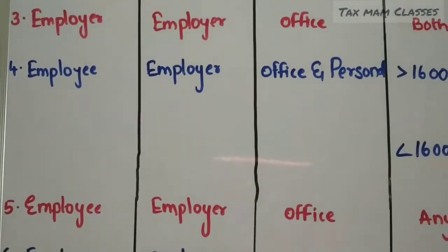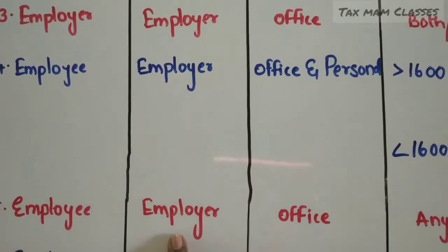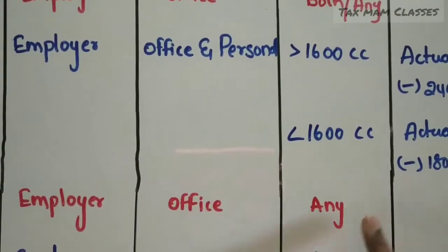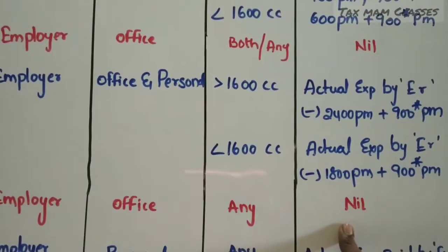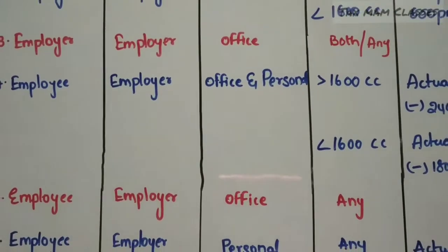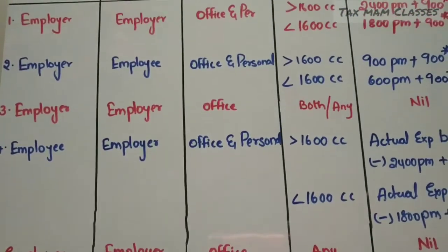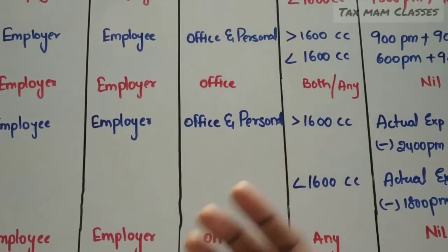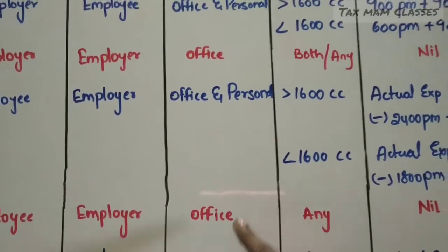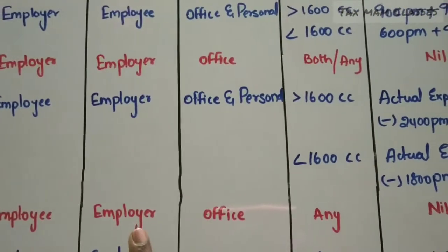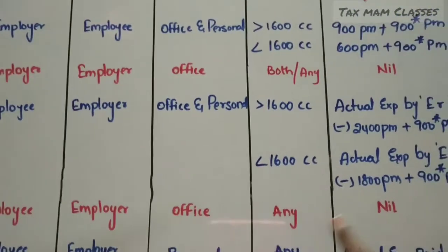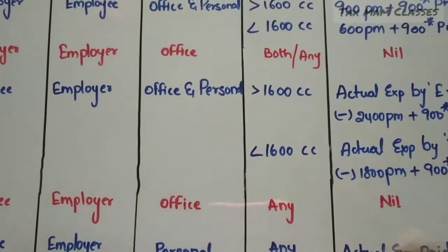In the fifth situation, the car is owned by the employee, expenses are met by the employer, and it is used only for office purpose. Whether it is a big car or small car, the TVP is nil. The car is owned by the employee, all expenses — maintenance, fuel, etc. — are met by the employer, but since it is fully used for office only, there is no benefit to the employee, so it is not taxable.